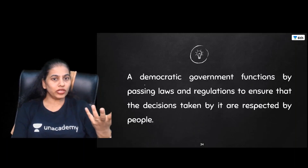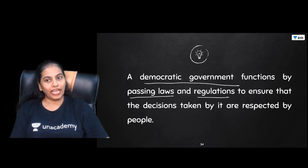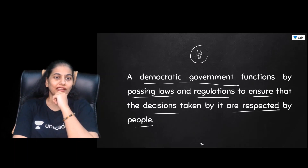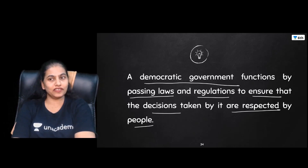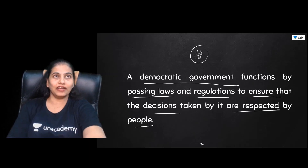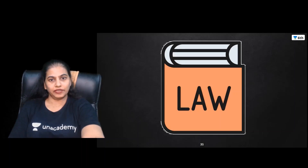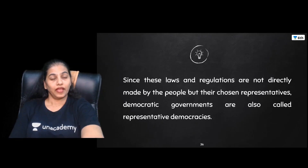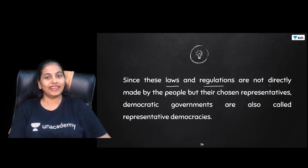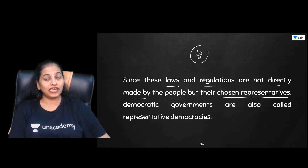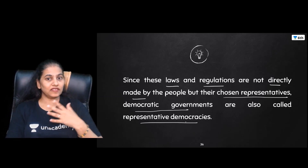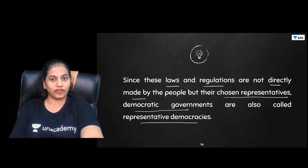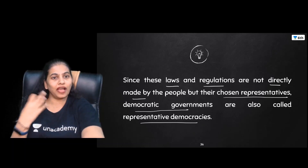The main role of a democratic government is to pass laws and regulations to ensure that decisions taken by it are respected by the people. If the people do not respect the government's decisions, the system cannot function. These laws and regulations are not made directly by us — our representatives, whom we chose as part of a democratic government, make the laws on our behalf. These are called democratic representatives, or representative democracies.